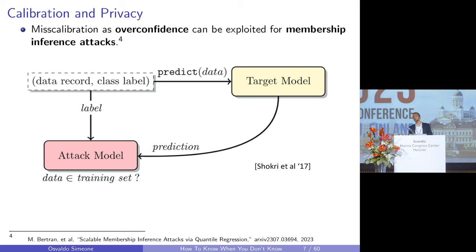Calibration is not only important for reliable decision making, but also for robustness. For instance, it's well known that if a model is overconfident — poorly calibrated — it is also more prone to membership inference attacks, whereby an attacker tries to find out if a certain data point was used in the training of a model. An overconfident model will respond with higher confidence to examples it has seen before, making it easier for an attacker to identify training data.